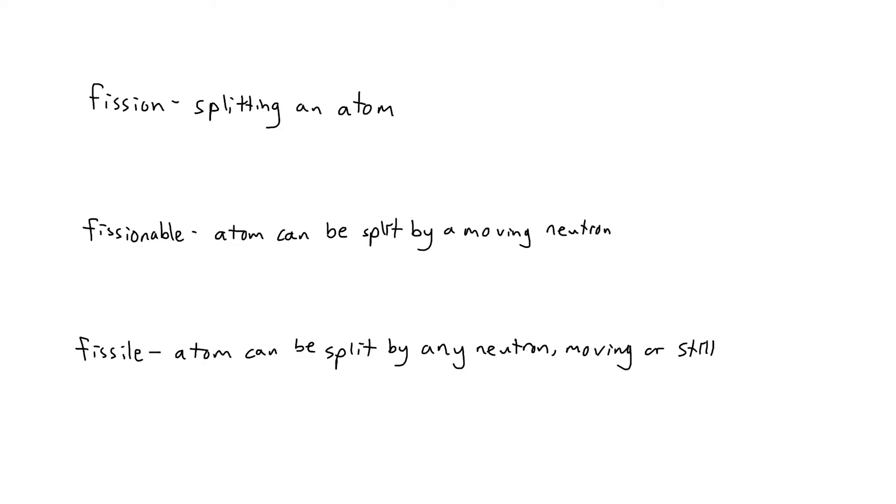A fissile atom is a fissionable atom, with one important difference. A fissile atom can fission if it absorbs a neutron of any energy, including neutrons with no energy. That is to say, a neutron that's not moving. No matter what kind of energy your neutron has, it can always fission a fissile atom. Therefore, fissile atoms are easier to fission than fissionable atoms.